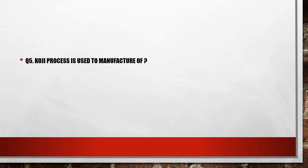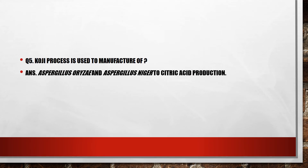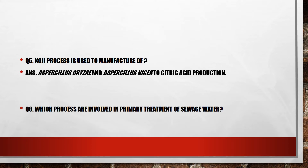Fifth question: the Koji process is used for the manufacture of what? The answer is it uses Aspergillus oryzae and Aspergillus niger for citric acid production. Koji is used for citric acid production and it is a fermented food.